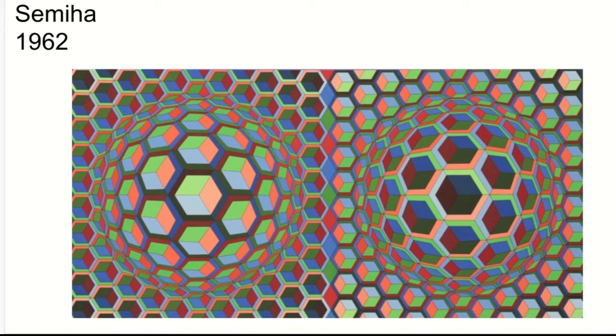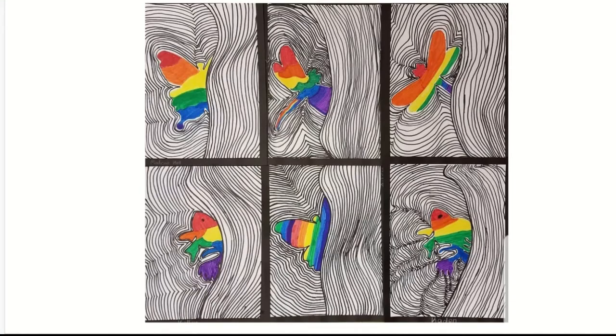So we are going to create our own optical illusion art. Here are some student examples. We're going to focus on using line and then black and white to create the contrast. And then something bright and colorful popping out in the middle. And it's going to look like it's kind of flying or swimming out of the lines.